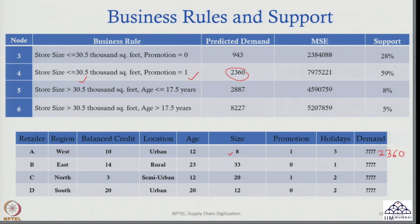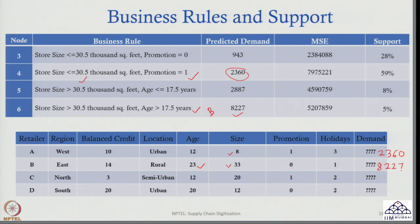Now, can you find out the predicted demand of Retailer B? I can. First, I check the size of the store. The size in this case is 33,000 square feet, so obviously the size is big — that means it is either in node 5 or node 6. Then I check age. Age is 23, and age greater than 17.5 means Retailer B falls here, giving a predicted demand of 8,227. So from this retailer I would predict they will place an order of 8,227 units.